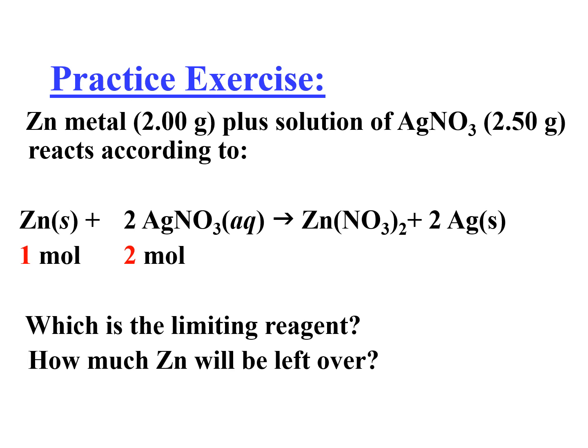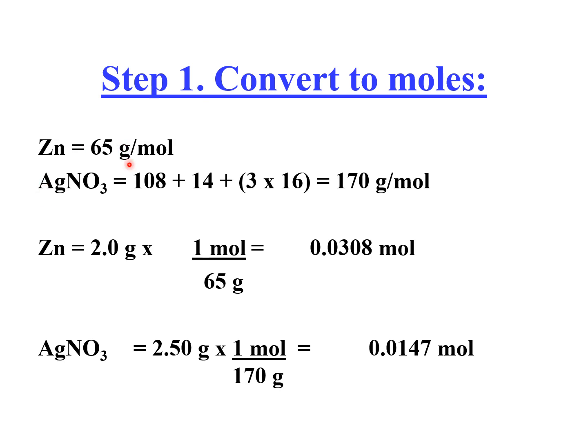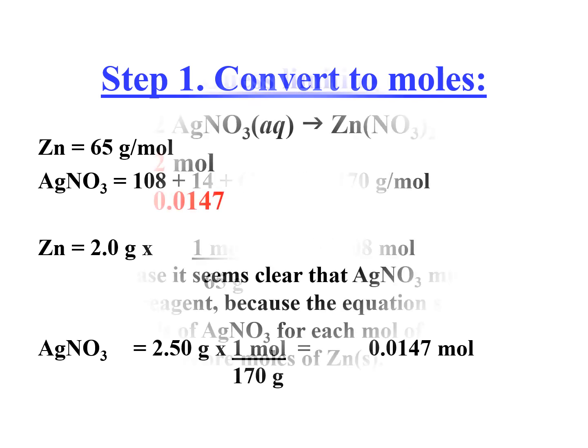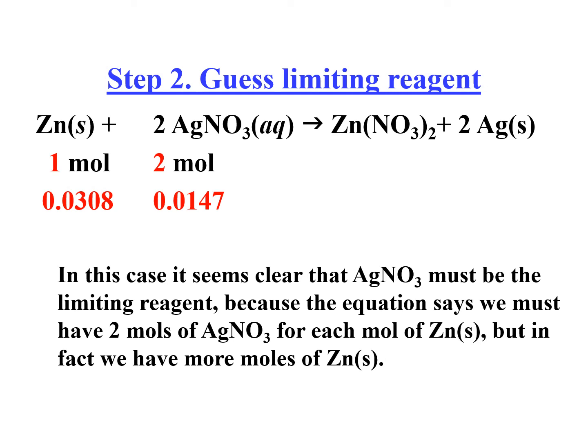Suppose you are given zinc metal, 2 grams, plus a solution of silver nitrate, 2.5 grams. Reacts according to this reaction. It's 1 is to 2. Which is the limiting reagent? How much zinc will be left over? Para namang binigay na yung answer. How much zinc now will be left over? 65 grams of zinc. 65 grams per mole, that is the molecular weight of zinc. And for silver nitrate, it's 170 grams per mole. 2 grams of zinc is equivalent to 0.0308 mole. And 2.5 grams of silver nitrate is 0.0147 mole.